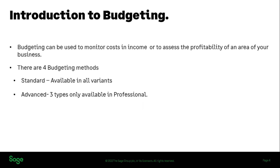A quick introduction to budgeting — why would you want to use it? It's a good way to monitor your costs and income and you can assess your profitability. You might be setting a budget to push the business, or you may be restricted by that budget — it works both ways. There are four budgeting methods: standard budgeting, which is available in all variants of the software, and advanced budgeting with three different types going into different levels of detail, which are only available in the Professional version of the software.